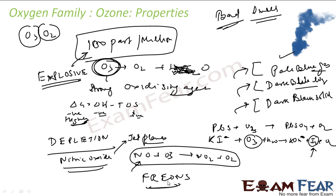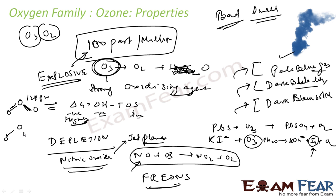Regarding the structure of ozone: it consists of 3 oxygen atoms, and the bond length is 128 pm. There is resonance in ozone — one structure has a single bond and the other has a double bond, with lone pairs on the terminal oxygens. The bond angle is approximately 117 degrees. This is the structure of ozone.